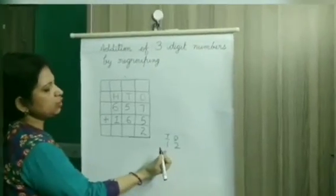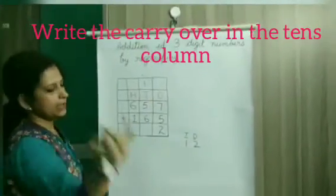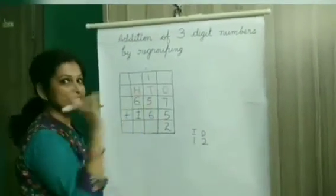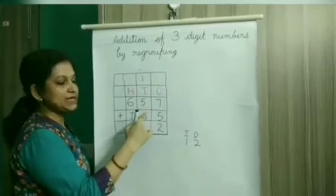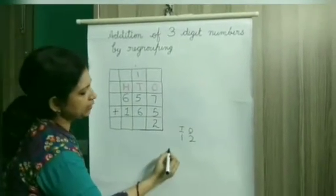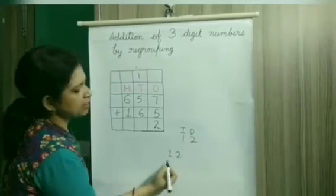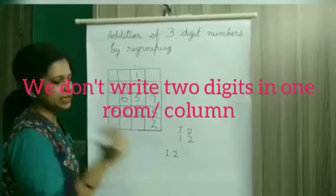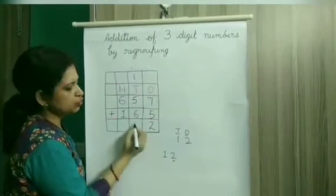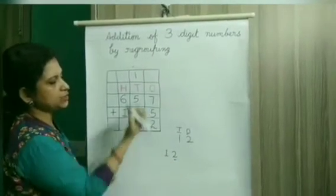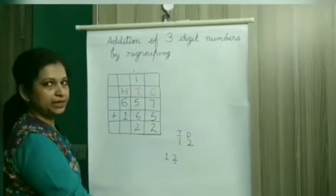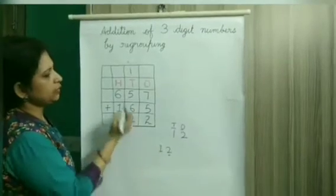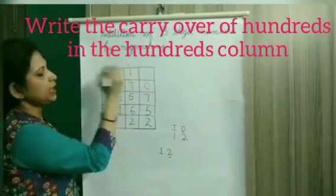Now this carry will go on the tenth column. So let's add this one plus 5 is 6 and 6 plus 6 is 12. Now again we have 12. We cannot write two digits in one row. In the tenth column we will write only one digit. So we will write 2 here because this one is 100. It is going in the hundred. We did it in the maps and the grids also. So this one will go and carry over on the hundredths column.